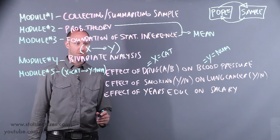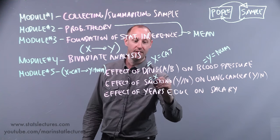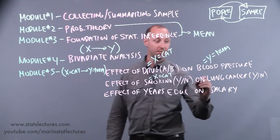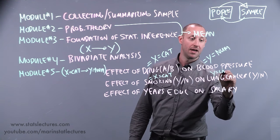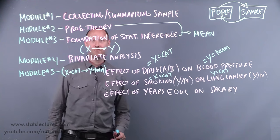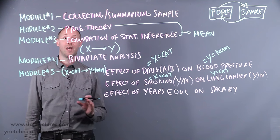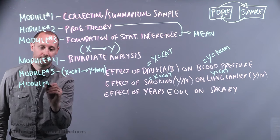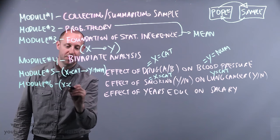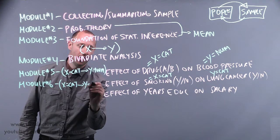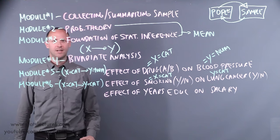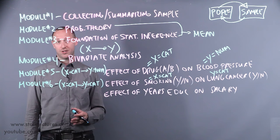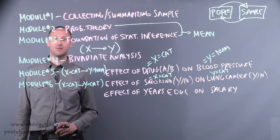In the second example, smoking is our categorical X variable and whether or not someone has lung cancer is our categorical Y variable. We're going to cover the analysis of the relationship between two categorical variables in module six. Here, we cover things like the chi-squared test, Fisher's test, odds ratios, and related topics.